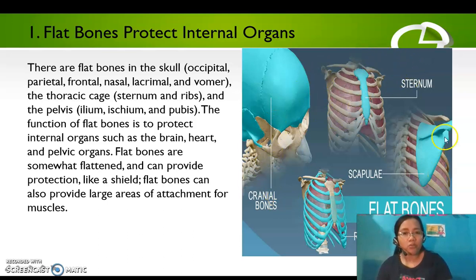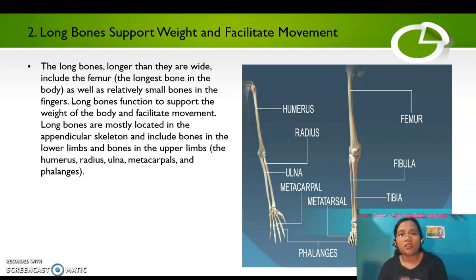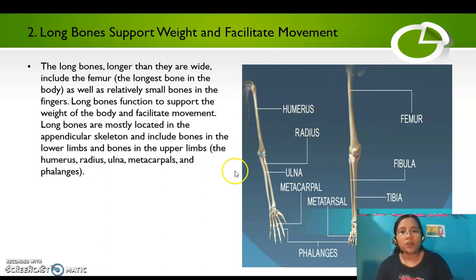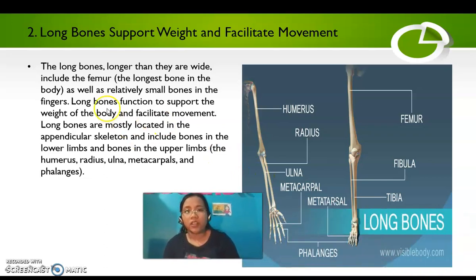Second are the long bones, which support weight and facilitate movement. Long bones are longer than they are wide and include the femur — the longest bone in the body — as well as relatively small bones in the fingers. Long bones are mostly located in the appendicular skeleton and include bones in the lower and upper limbs: the humerus, radius, ulna, metacarpals, and phalanges.